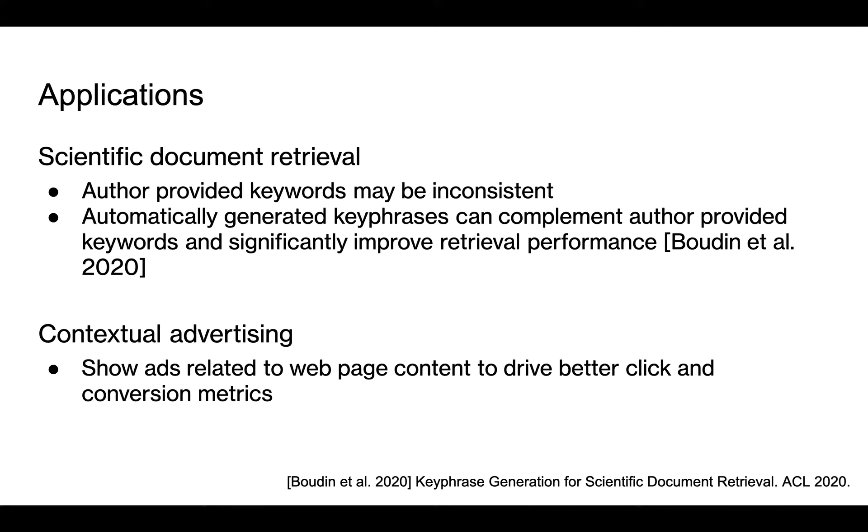Keyphrase generation has many downstream applications. Here I am giving two examples. The first is scientific document retrieval. A recent research shows that using generated keyphrase in addition to the scientific document itself can significantly improve retrieval performance. Automatic generation is helpful as author-provided keyphrase may not be always consistent across documents.